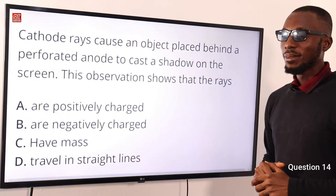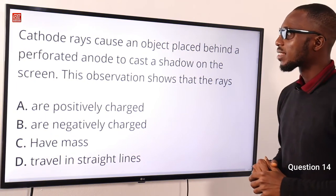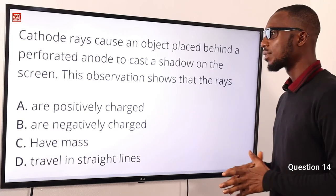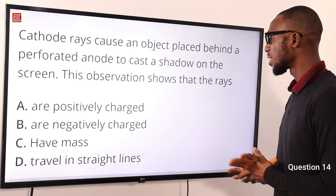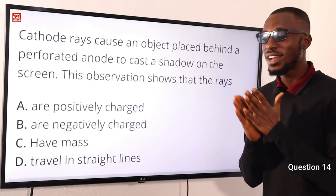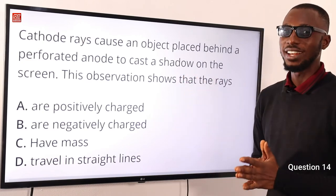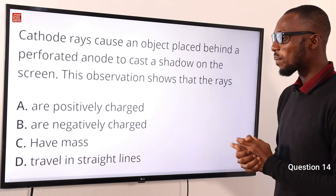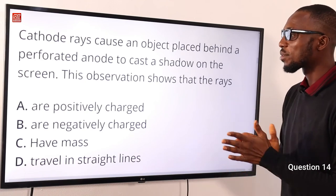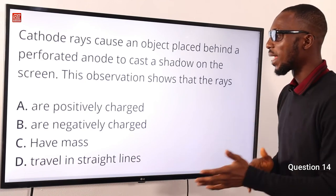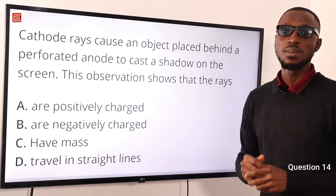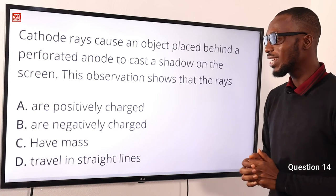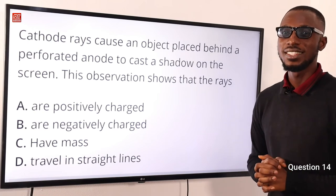Number 14. Cathode rays cause an object placed behind the perforated anode to cast a shadow on the screen. This observation shows that the rays travel in straight lines. Cathode rays are not positively charged. The correct option is option D — they travel in straight lines.